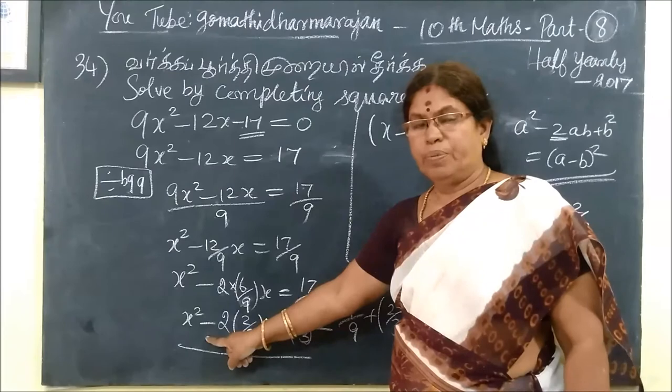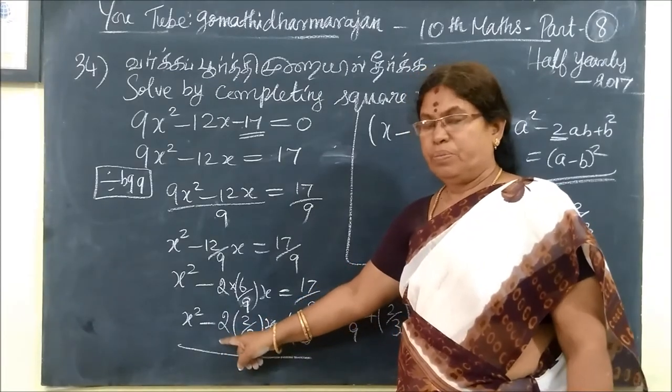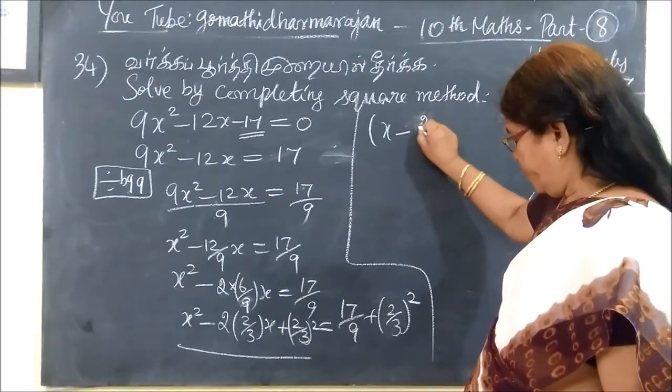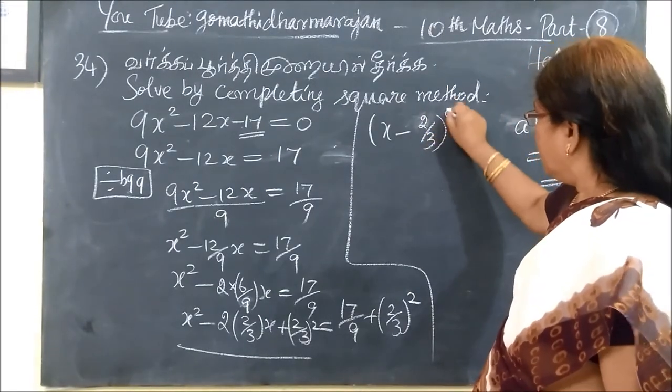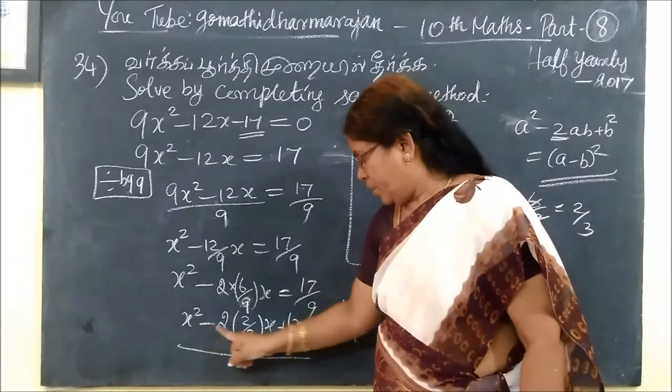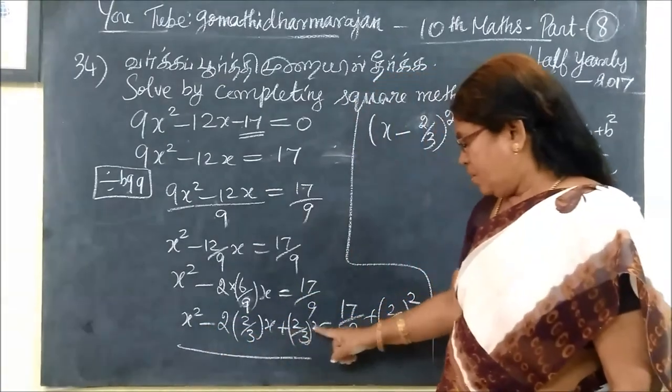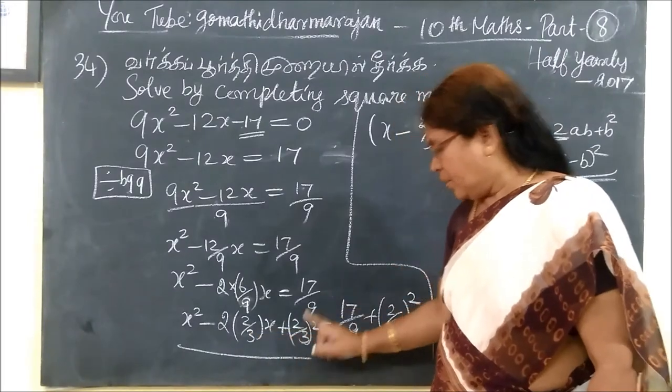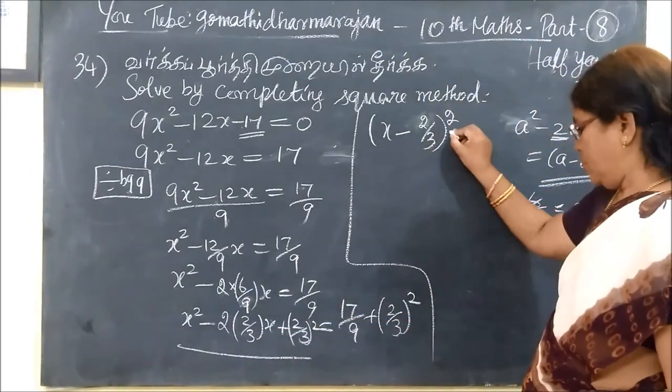Minus is the outcome. Students are making mistakes here. This is the minus. Then, 2 by 3, 2 by 3 whole square. This is a² - 2ab + b². So, this b is 2 by 3. So, this is equal to...